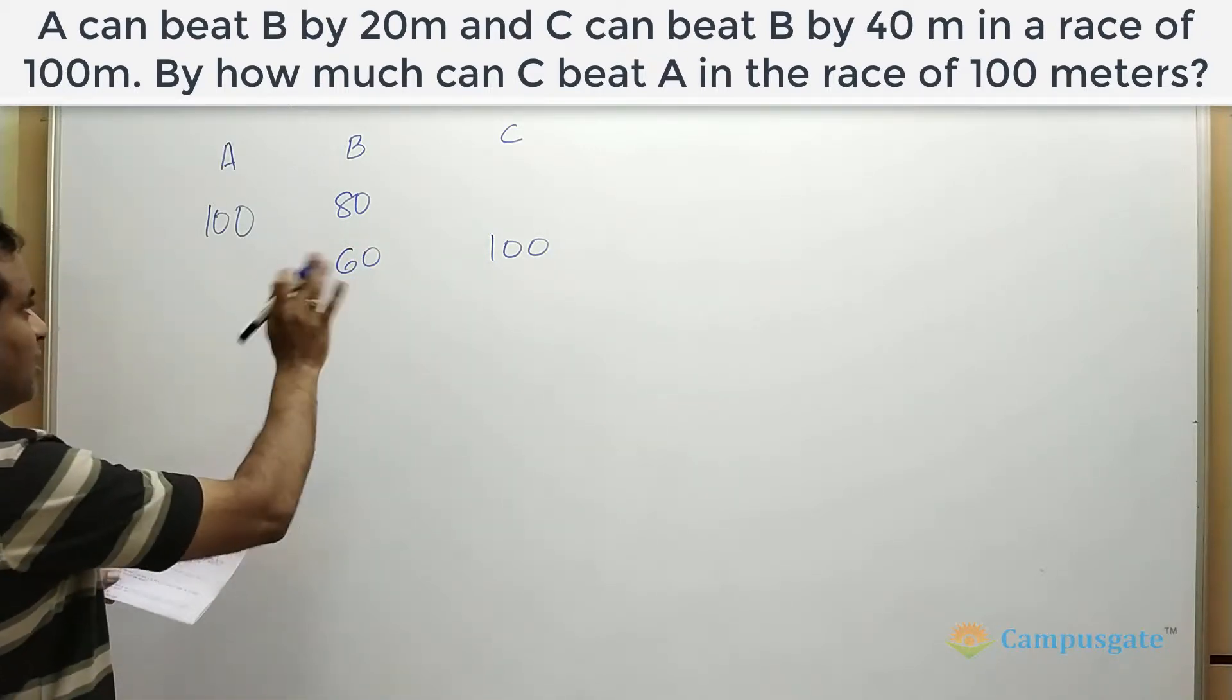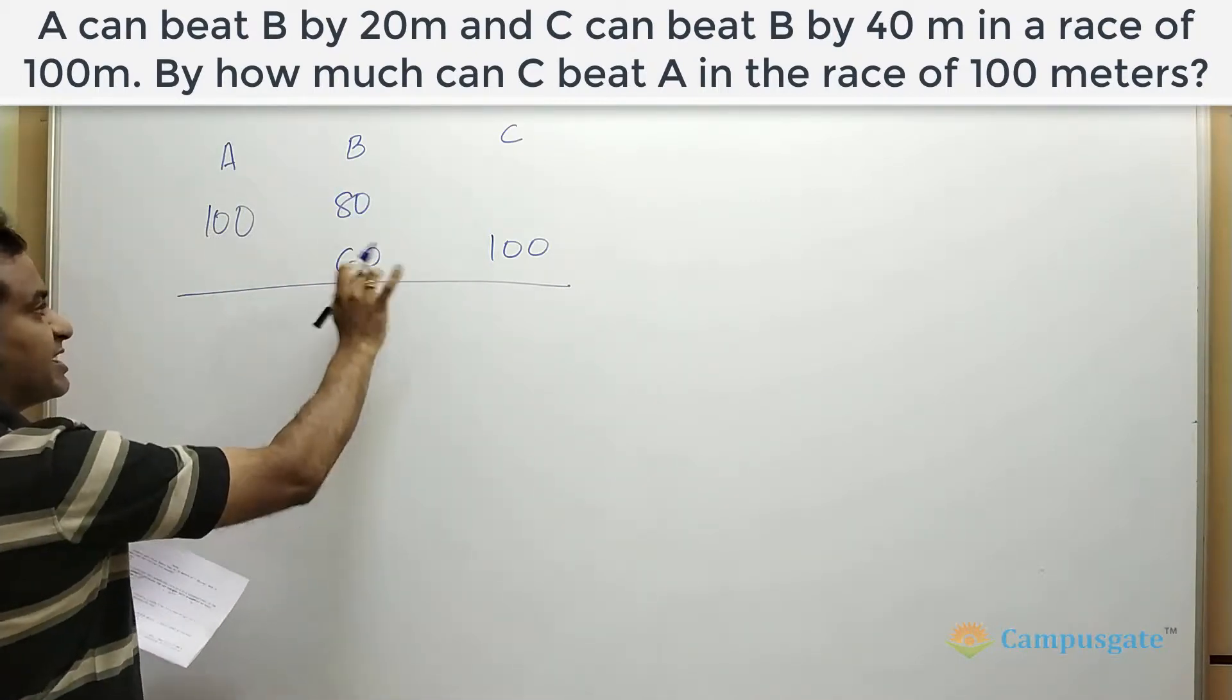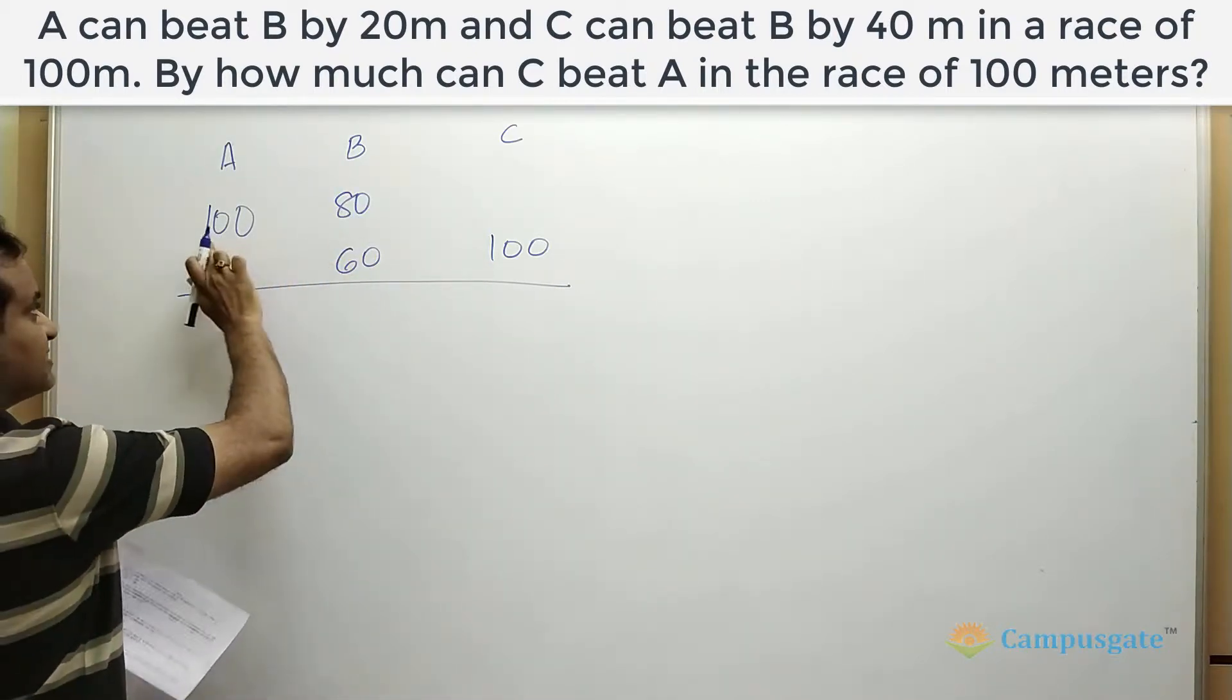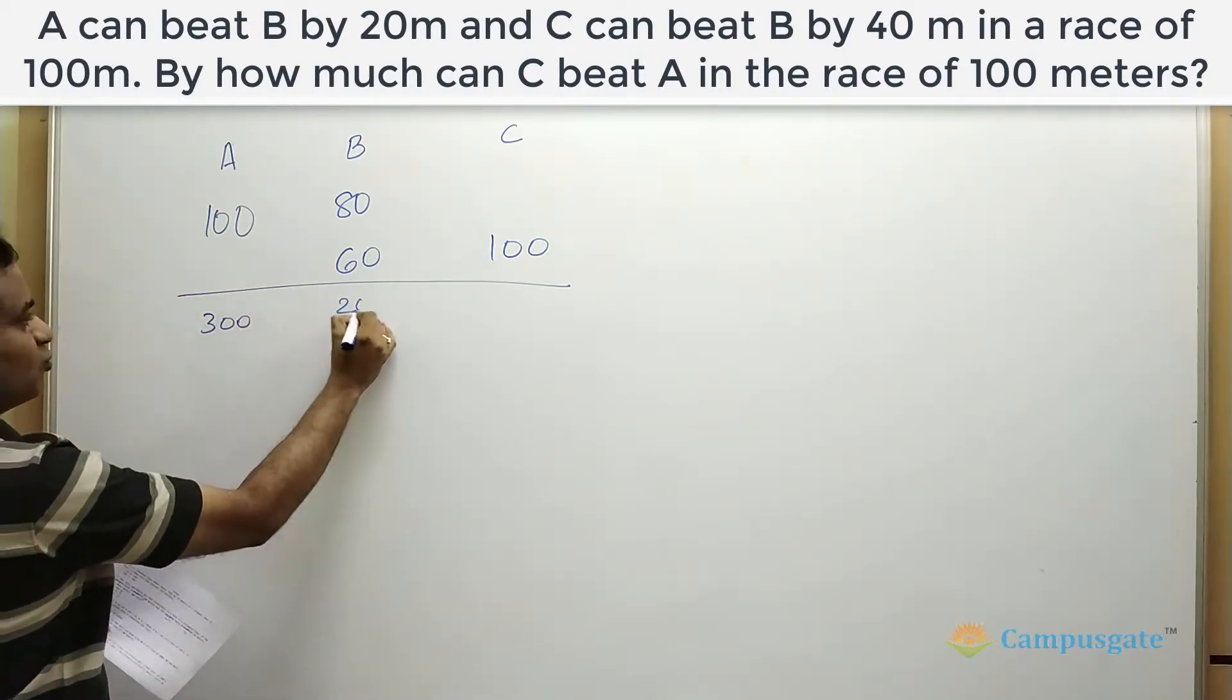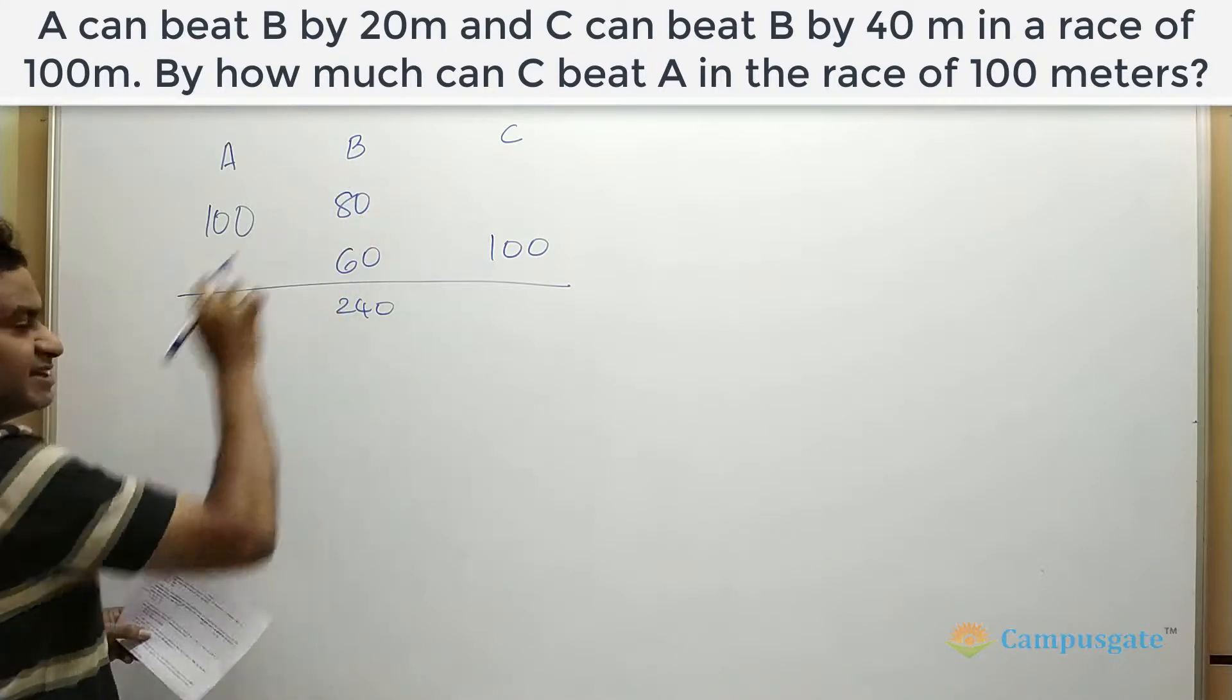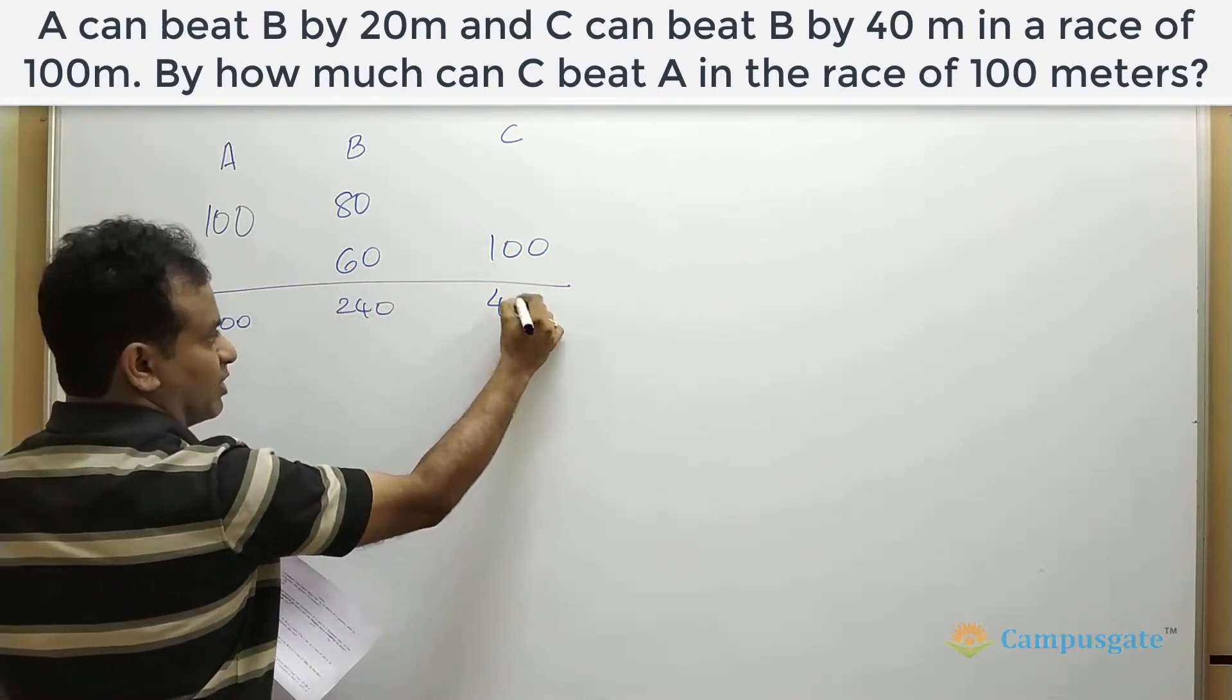So we have to equate these numbers to get a common ratio. So here 80 will be there, here 60 will be there. So let us multiply this equation by 3. So then we will get 300 and 240 if you multiply this ratio by 3. If you multiply this ratio by 4, you will get same 240 here. So here you will get 400.